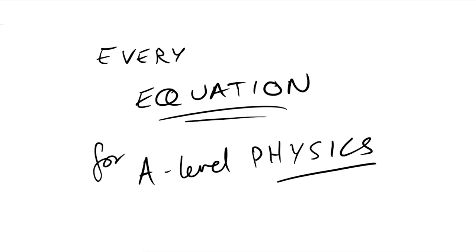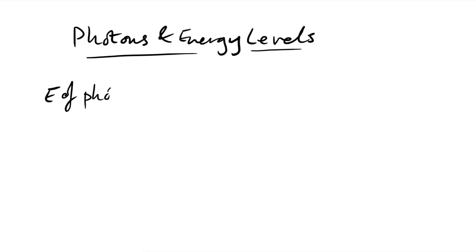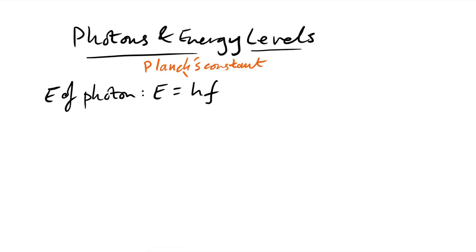Let's start off with photons and energy levels. First, we have the energy of a photon given by E equals hf, where h is Planck's constant (6.63 × 10⁻³⁴) and f is the frequency in hertz. Because of the wave equation, if we don't have frequency but do have wavelength, we can replace f with c over lambda — the speed of light over the wavelength.